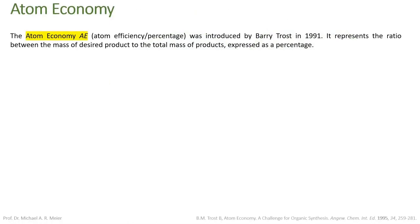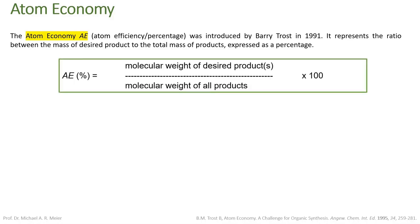Let's discuss one of the most important metrics for green and sustainable chemistry: the atom economy. The atom economy was introduced by Barry Trost in 1991. The formula is: atom economy (%) = molecular weight of the desired product(s) divided by the molecular weight of all products, times 100. It tells you that as many atoms as possible of the starting materials should end up in the desired product.